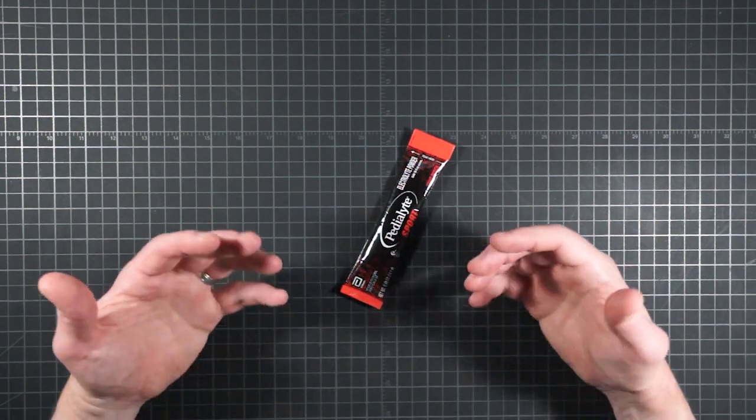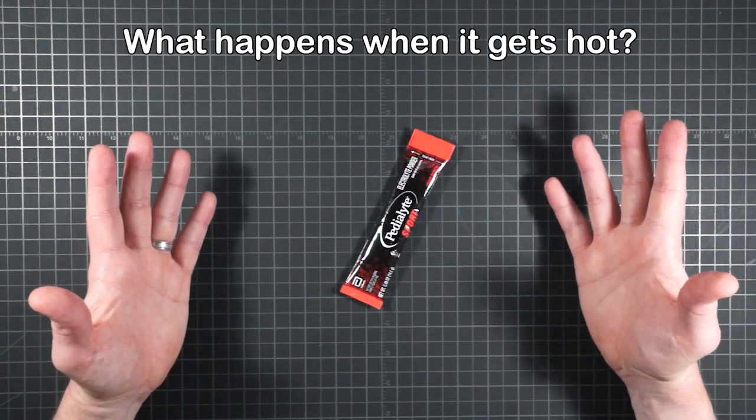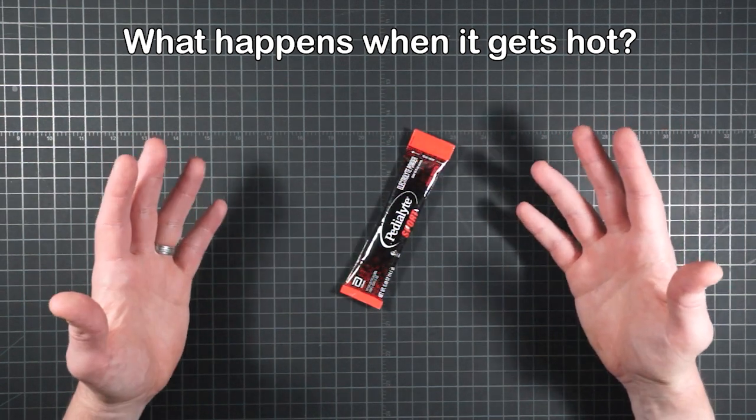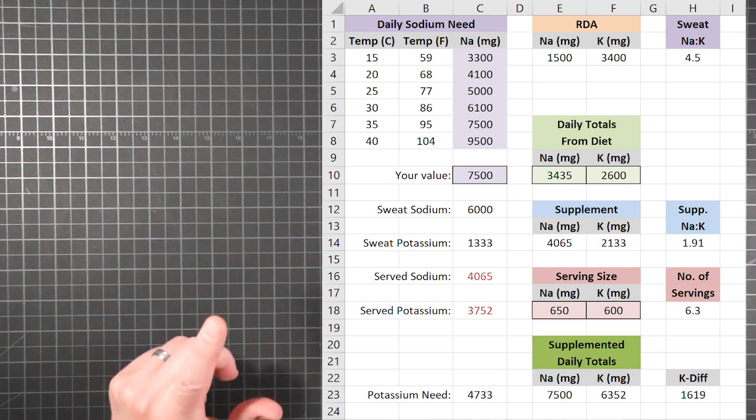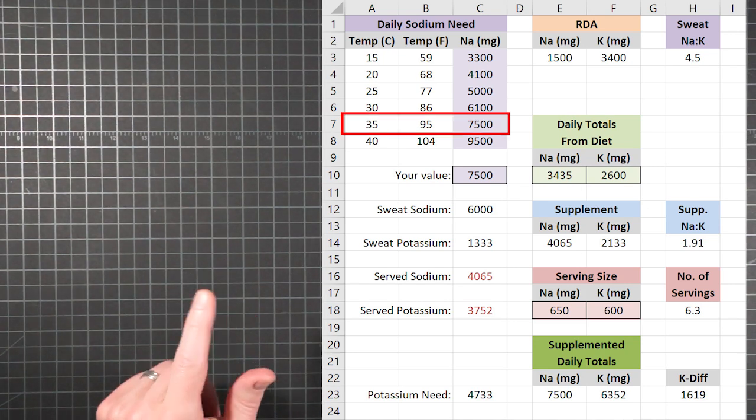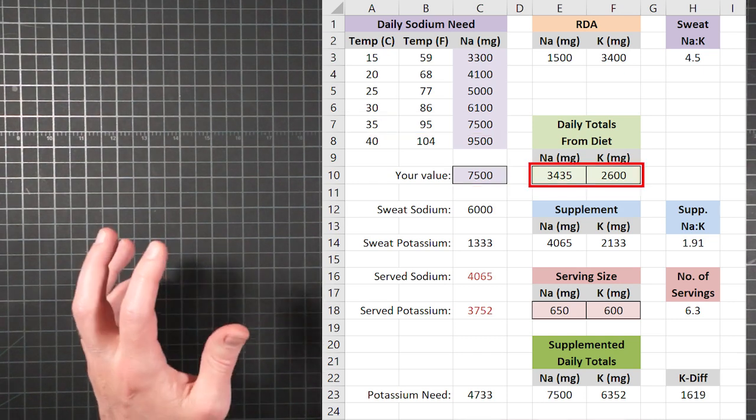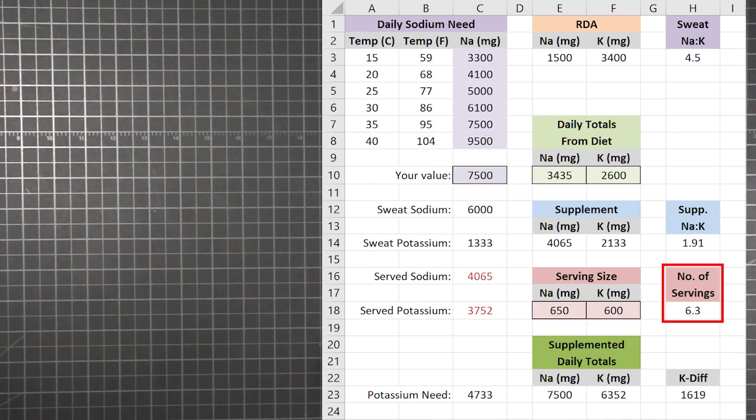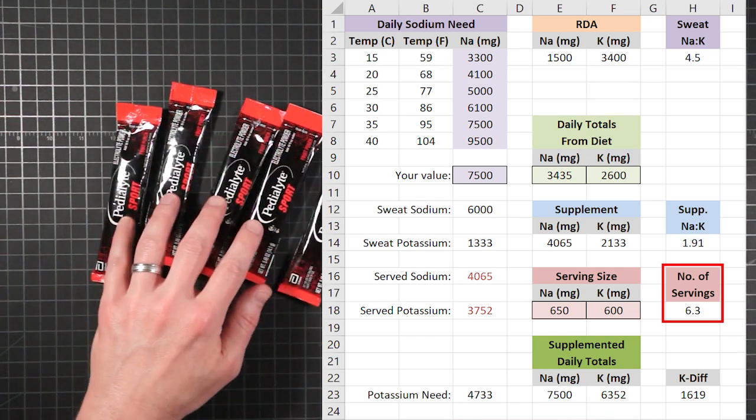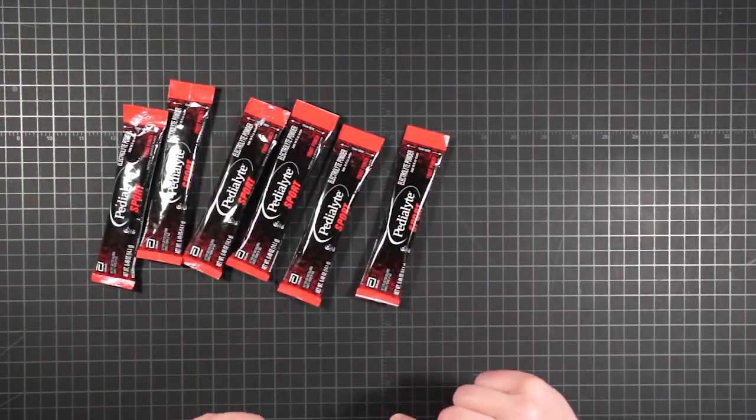But I'm not through with you yet. All of this was for a relatively cool 68 degree day. What happens when it's really hot, like PCT in the California desert hot? We go back to the calculator and put in the sodium need for a 95 degree day.